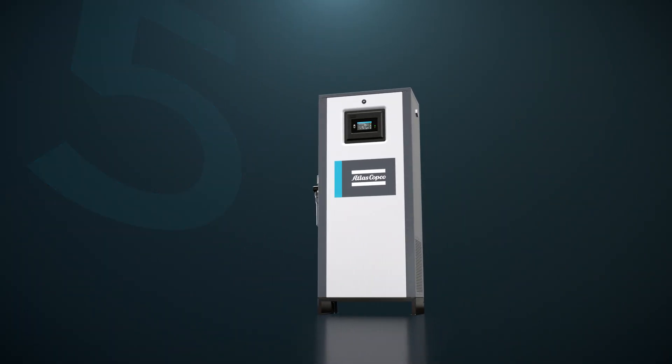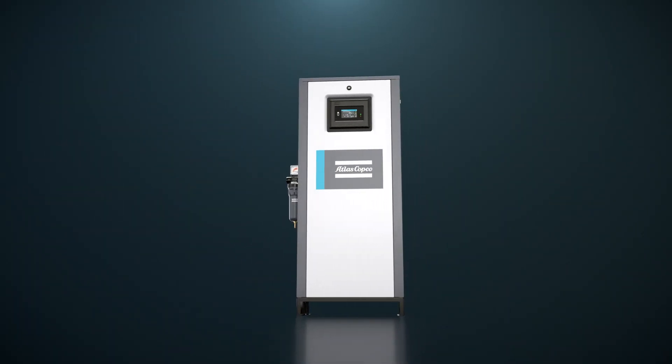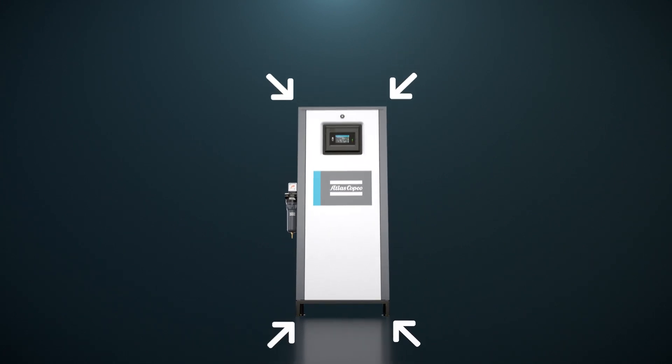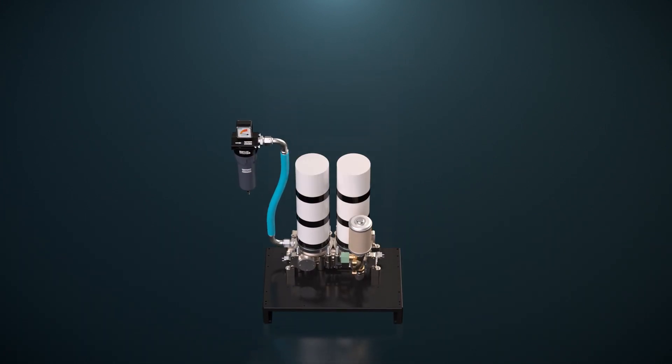Finally, dryers with ceramic desiccant can handle a higher airflow. That means we can make them more compact. Just take a look at the first dryer with Serides, the new Atlas Copco CD Plus 20-335, which is much smaller than its previous version.